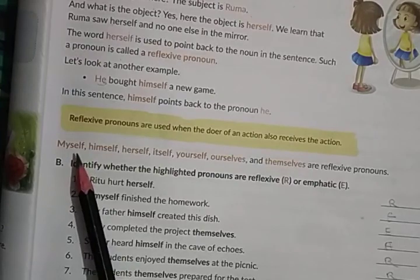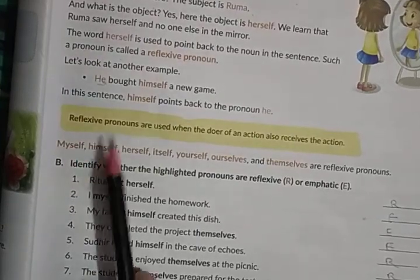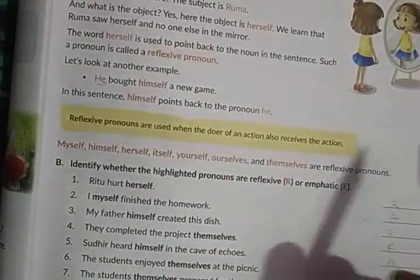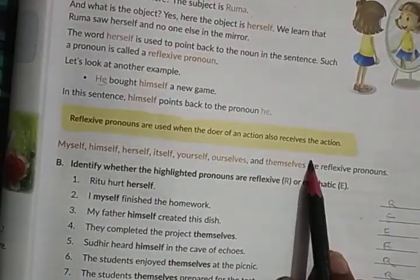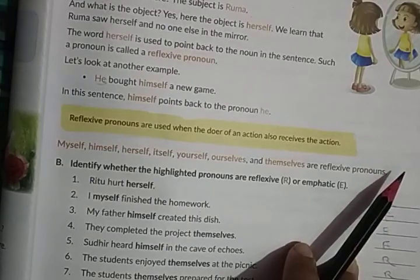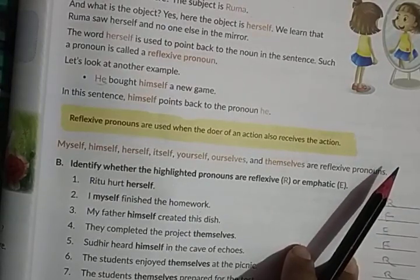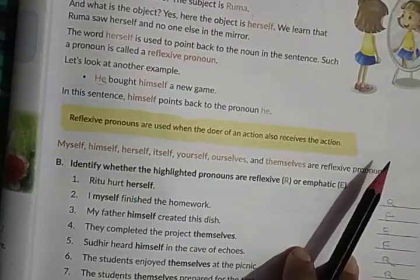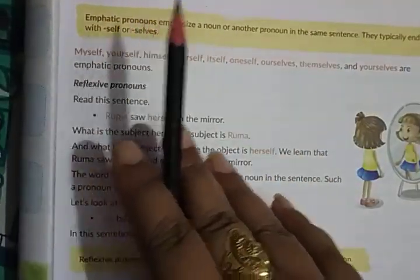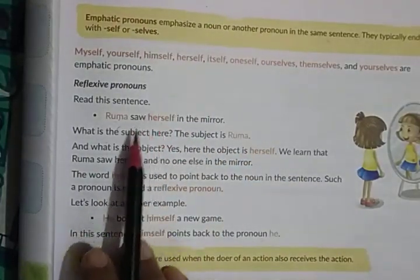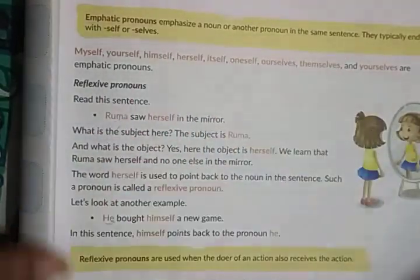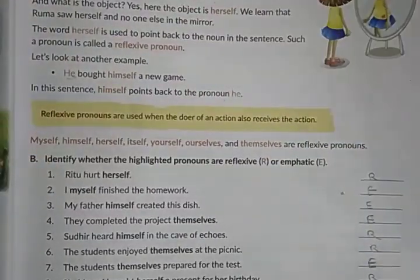In reflexive pronoun the examples are: myself, himself, herself, itself, yourself, ourselves, and themselves. In emphatic pronoun, the pronoun lays stress on the noun; in reflexive pronoun, the pronoun turns back to the noun or pronoun. This is how you can identify whether it is reflexive or emphatic.